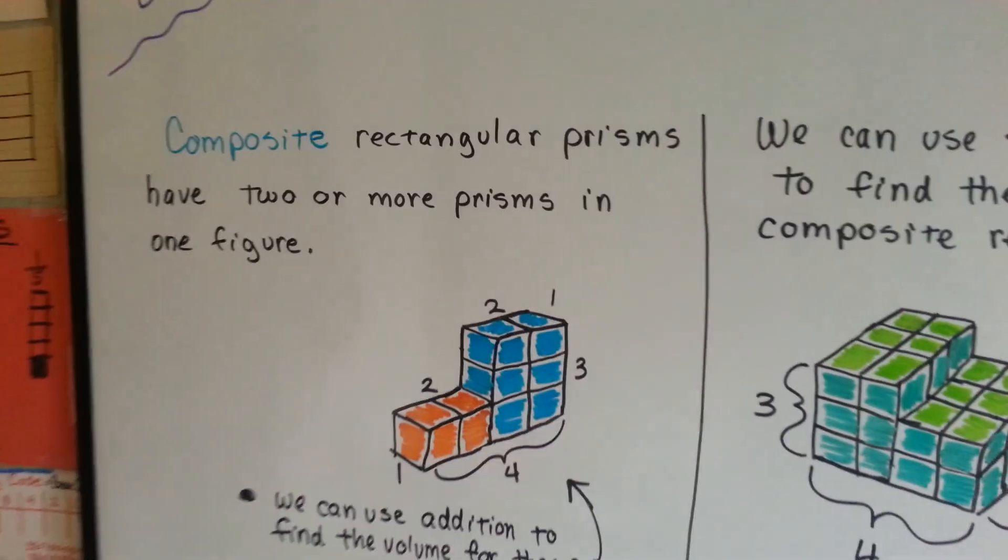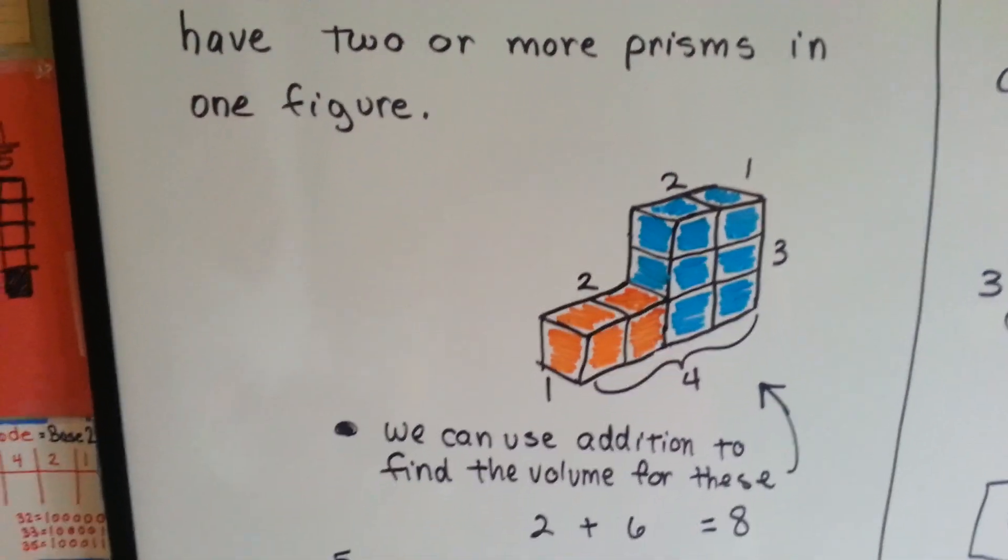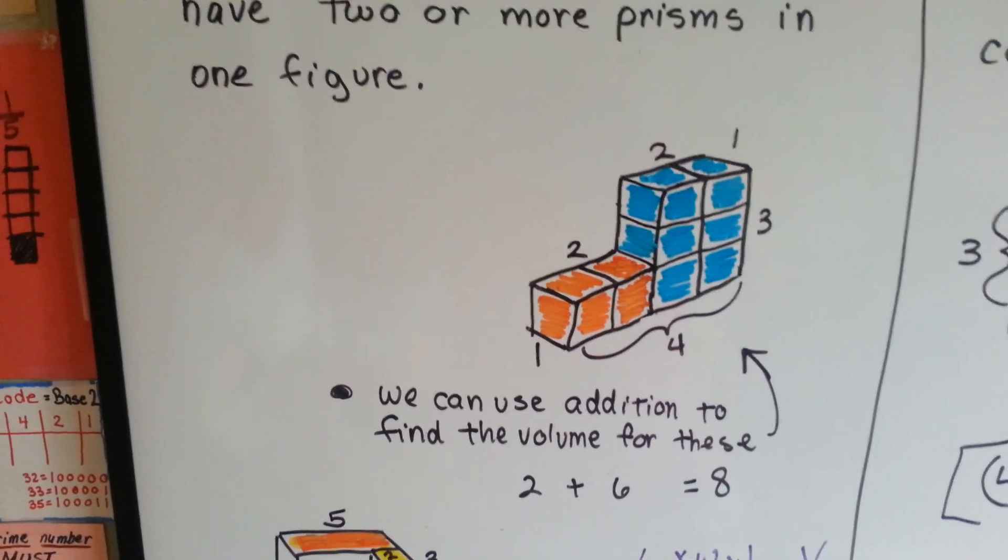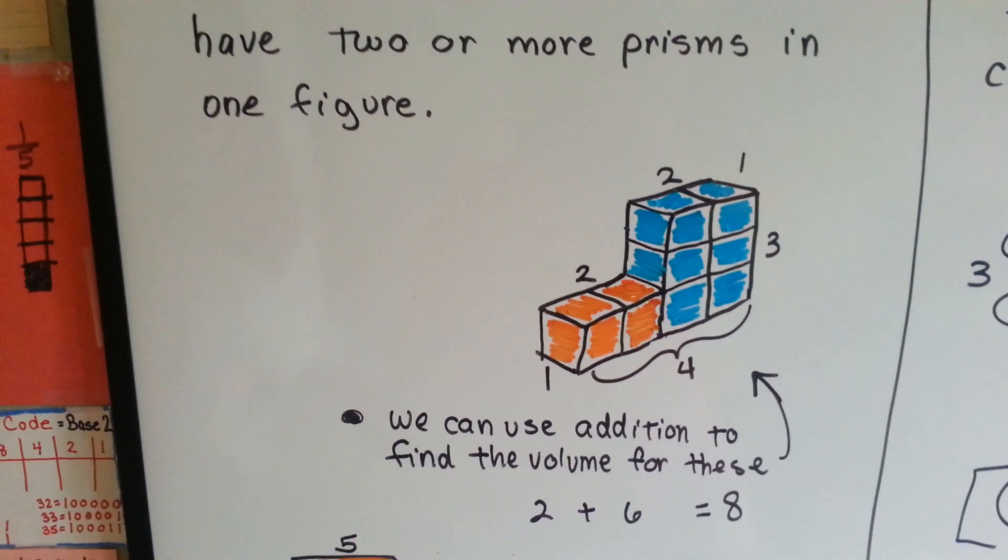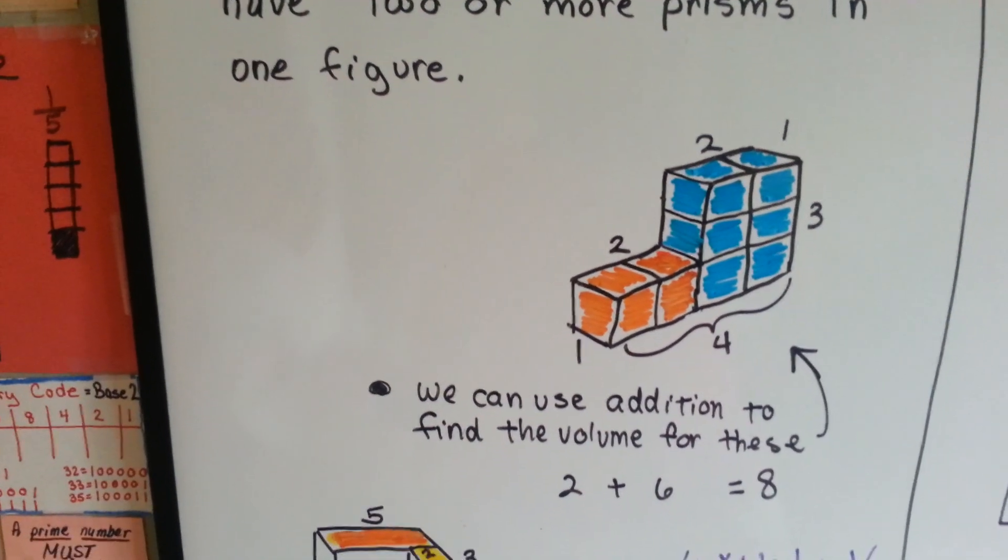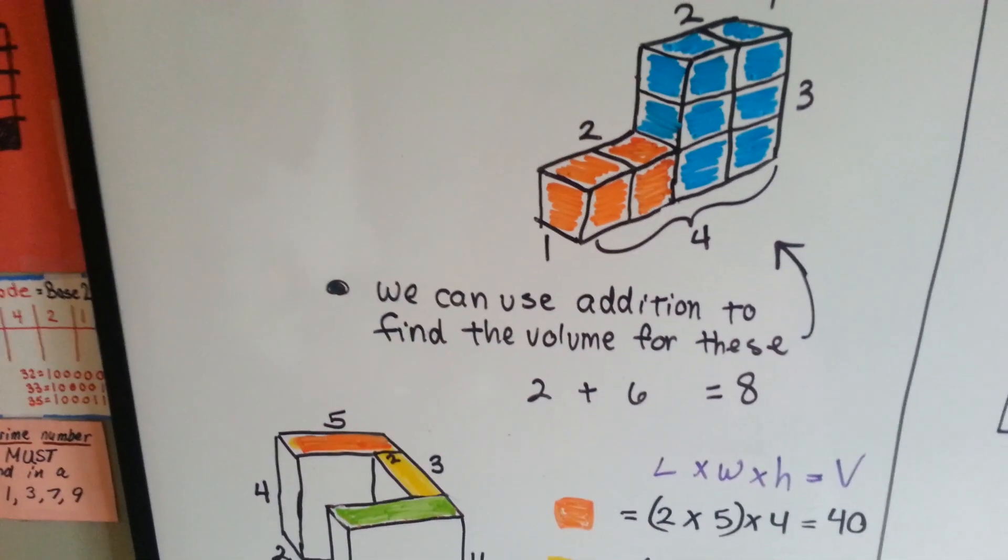Composite rectangular prisms have two or more prisms in one figure. We can use addition to find the volume for these. This is very easy to see that there's six blue and two orange. We just add them up. Two plus six is eight.